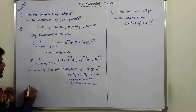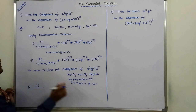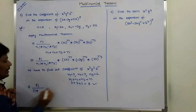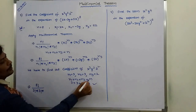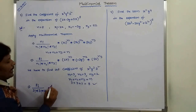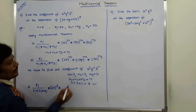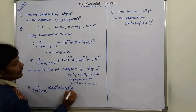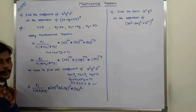Substituting these values: 8 factorial divided by 3 factorial into 3 factorial into 2 factorial, into (2x) whole power 3, into (minus 3y) whole power 3, into (5z) whole power 2.